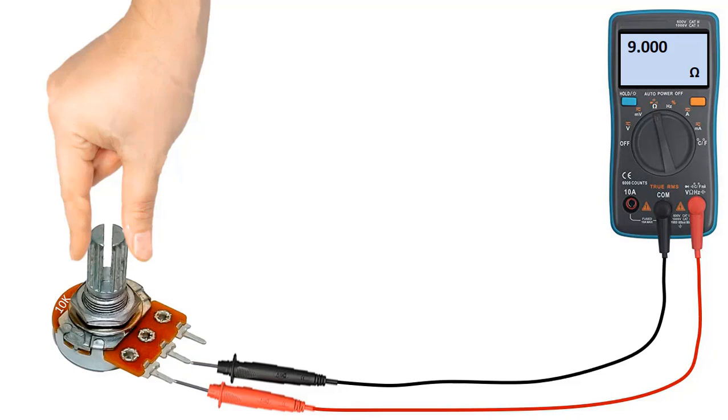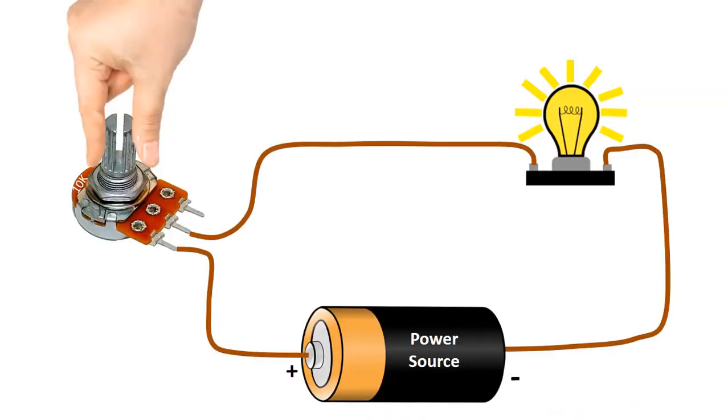So, if we are going to use the potentiometer as a variable resistor, we use the middle pin in common and we can adjust it to the desired resistance value by using one of the pins on the right or left. Now, we can look at how potentiometer is basically used on a circuit.